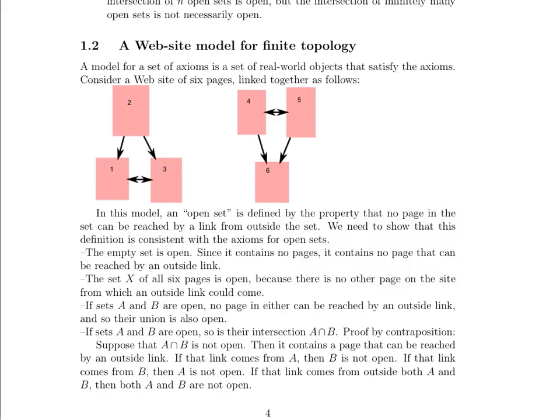So yes, according to our definition of open, which means that no page can be reached by a link from outside the set, that adequately makes the empty set open, the set X open, the union of any two sets open, the intersection of sets open. So it is an adequate definition of openness because it allows us to satisfy the necessary axioms.